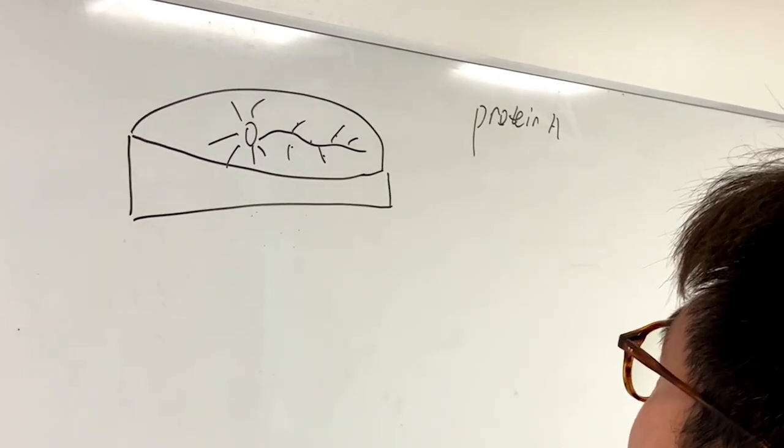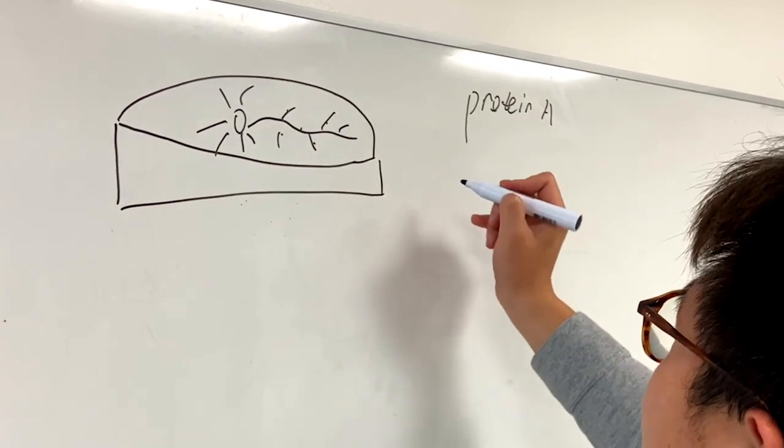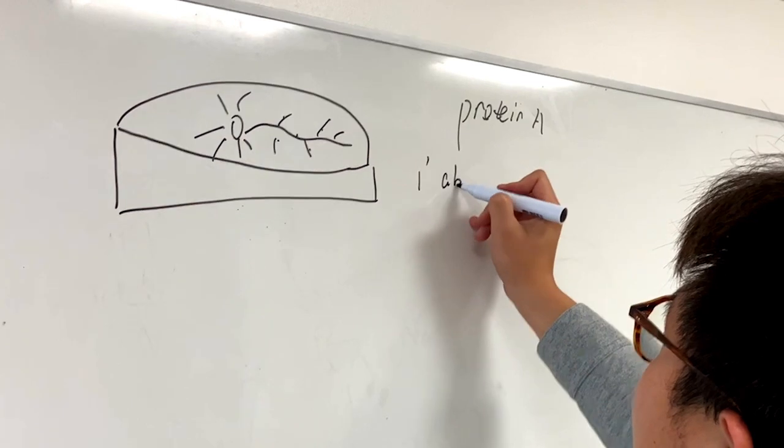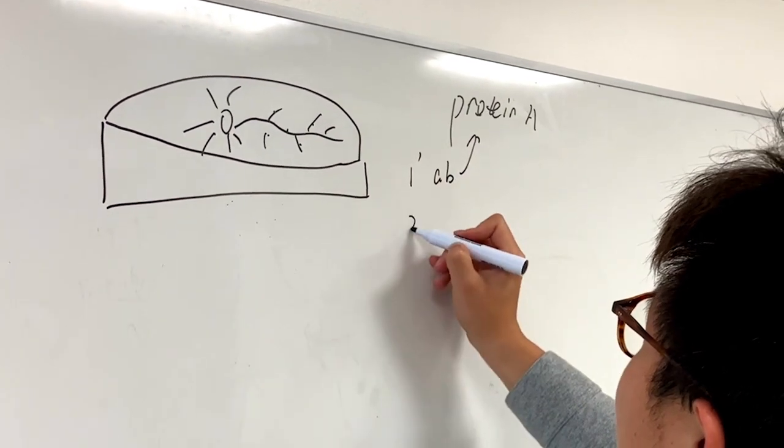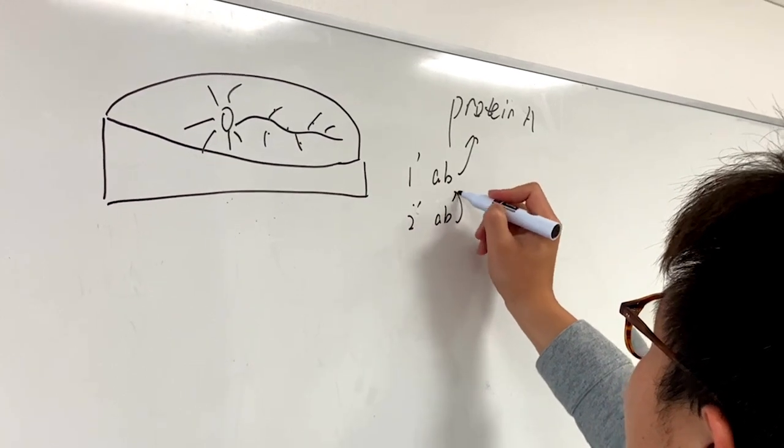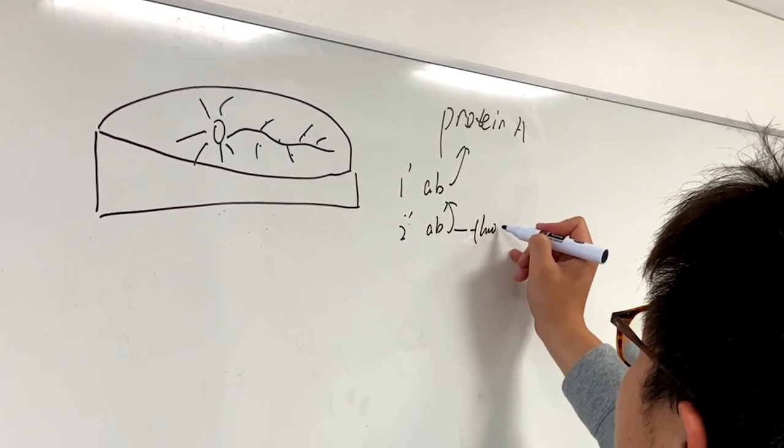The conventional immunofluorescent microscopy usually takes an antibody labeling strategy where we have a primary antibody that targets the protein A, and then we have a secondary antibody that targets the primary antibody. And the secondary is fluorescent, attached to a fluorophore.